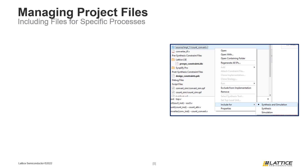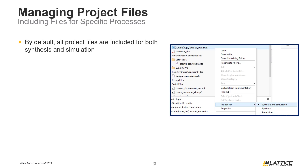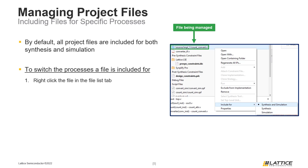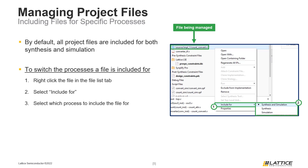One useful feature of Radiant projects is that files in an implementation can be included and excluded for specific processes. By default, all of the design files in a project are included for both synthesis and simulation. To switch the process a file is included for, right-click the file you want to modify from the File List tab, select Include For, and then select the process you want to include that file for. If the process a project file is included for is changed, the Radiant process flow will have to be run again.